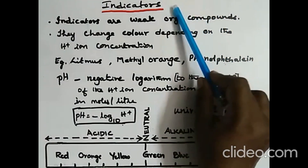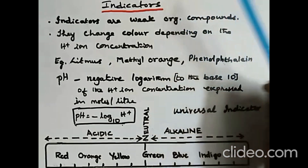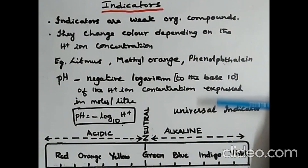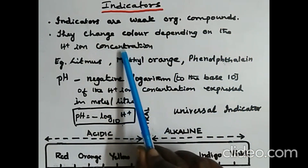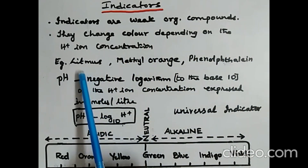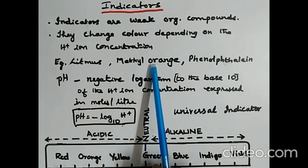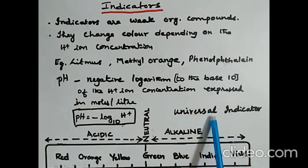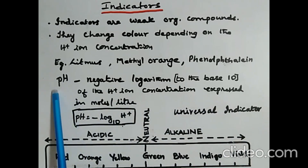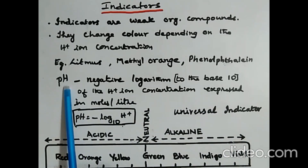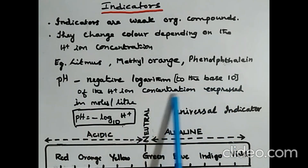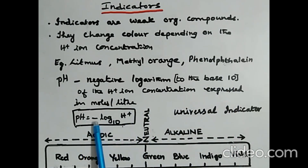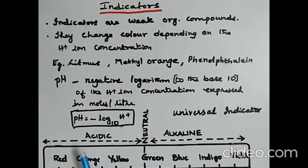The next is indicators. There are two types: common acid-base indicators and universal indicator. Indicators are weak organic compounds that change color depending on H+ ion concentration. Examples of common indicators: litmus, methyl orange, and phenolphthalein. The universal indicator example is pH paper. pH is the power of hydrogen — the negative logarithm to the base 10 of H+ ion concentration expressed in moles per litre: pH = −log₁₀[H+].